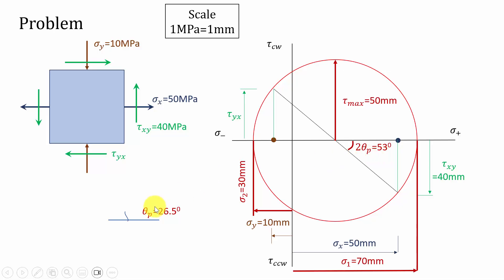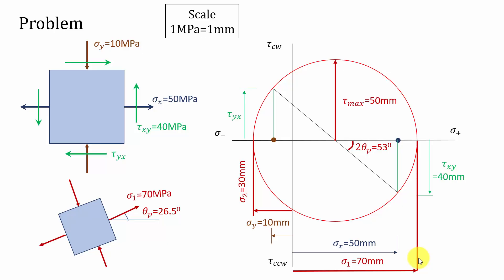Now I am drawing a horizontal line and θp is 26.5 degrees, because 2θ is 53 degrees, and I am constructing the element. Sigma x is acting in the tensile direction and sigma y is acting in the compressive direction. Converting using the scale: the distance of sigma 1 is 70 mm, and since 1 mm equals 1 MPa, sigma 1 equals 70 MPa. Similarly, sigma 2 is 30 mm, so sigma 2 equals 30 MPa. This is how we can construct the Mohr circle and evaluate the principal stress and principal plane. Thank you.